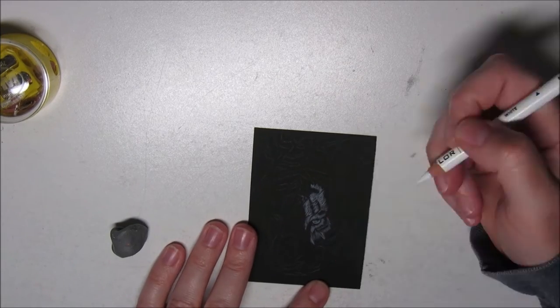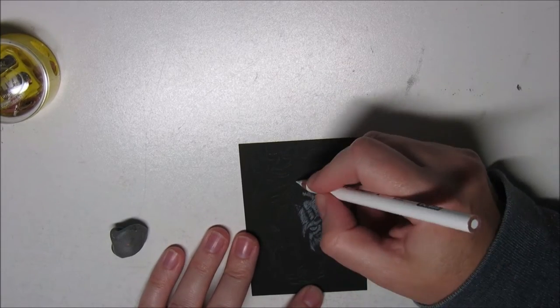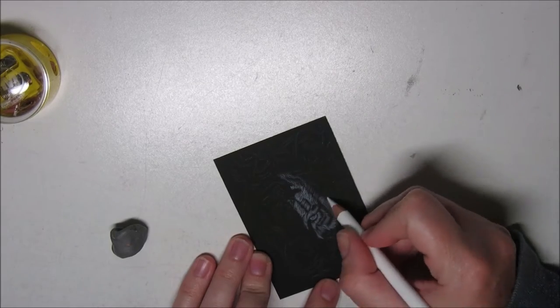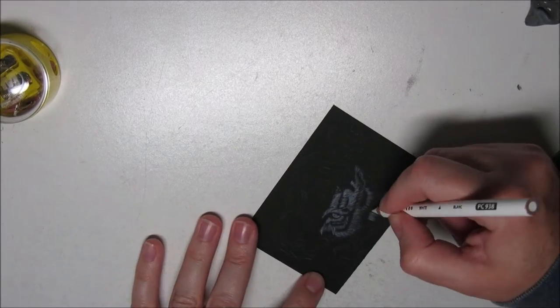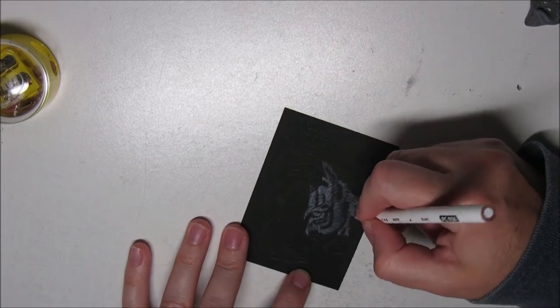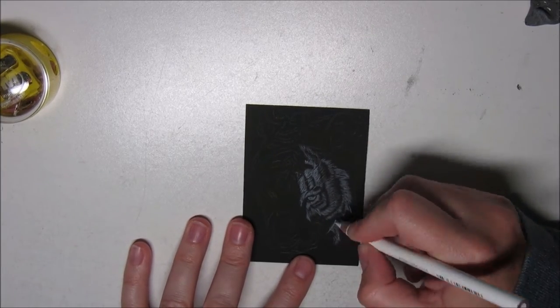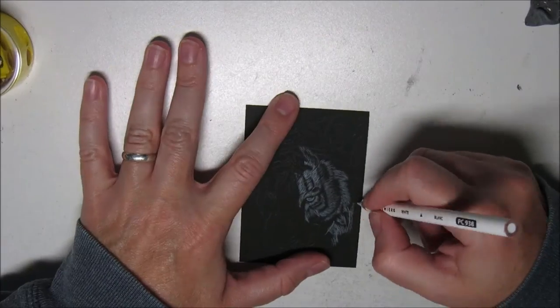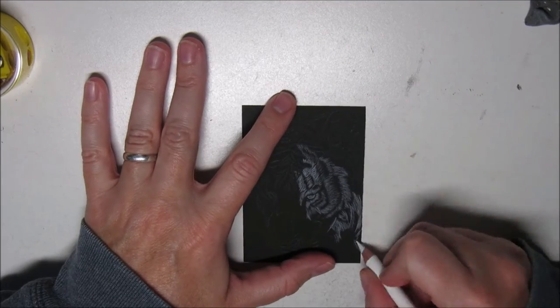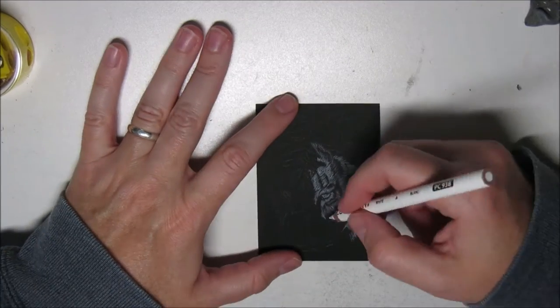I transferred my image with tracing paper and a white pencil, because if I sketch straight on the black paper and erase, it's going to show on the paper and not look good at the end. So I always transfer my line drawings onto black paper whenever I use black paper.